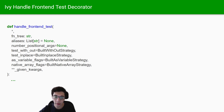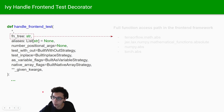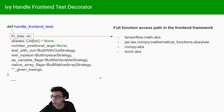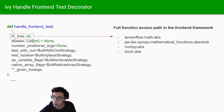Let's take a closer look at the HandleFrontEndTest decorator, examining its arguments. First, we need to provide the function_tree, which is the full function access path in the frontend framework. If we are testing an abs function in TensorFlow, it would look like tensorflow.math.abs. In a more complex situation, for the JAX framework, you need to specify jax.lax.numpy.mathematicalfunctions.abs, which is basically where the function exists in the original framework.